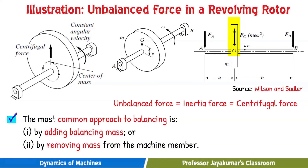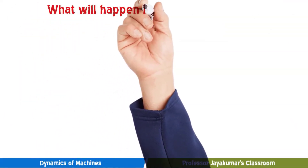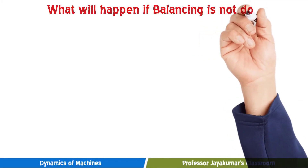Normally, balancing can be done by two methods: one, by adding an additional mass in the opposite direction to counter the unbalanced force, or by removing some mass from the system. Now, let us see what will happen if balancing is not done.